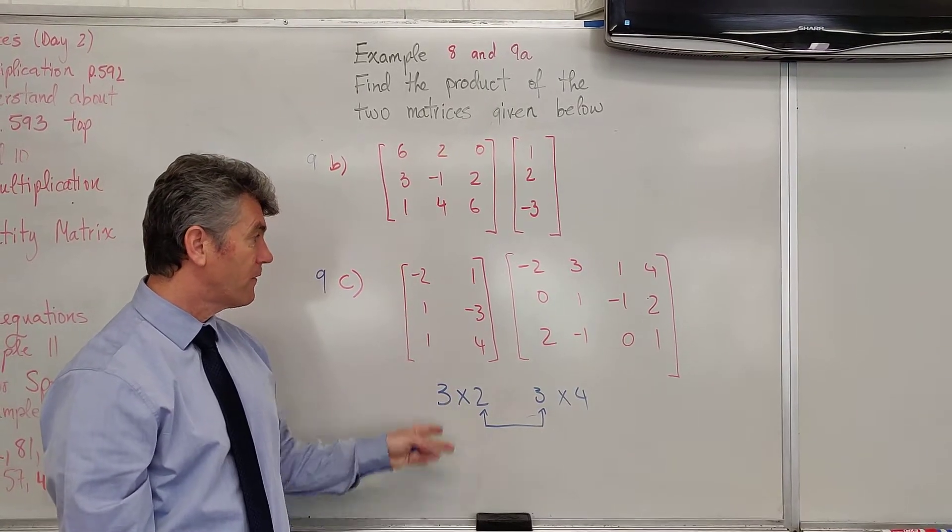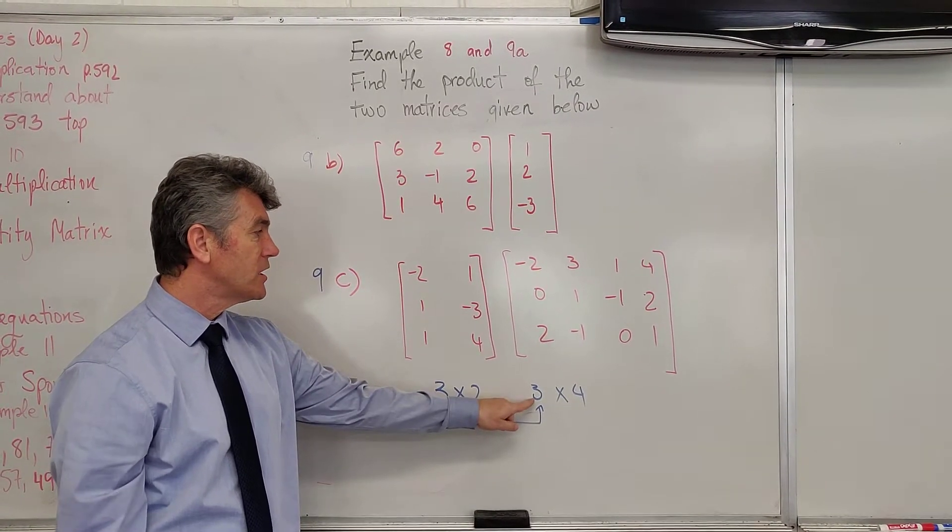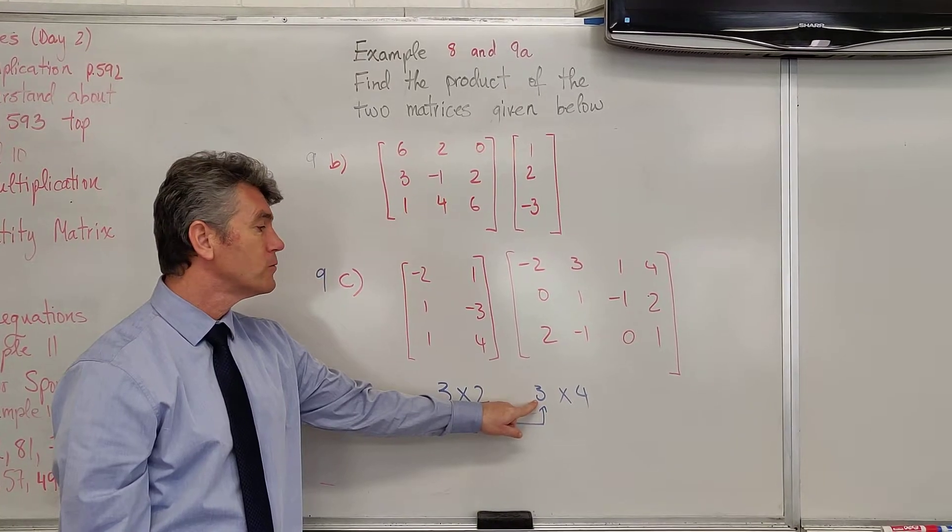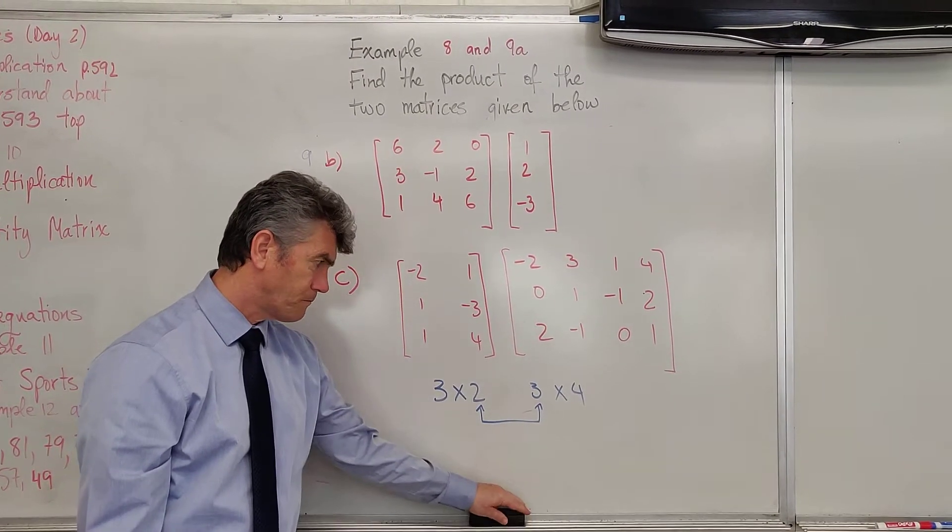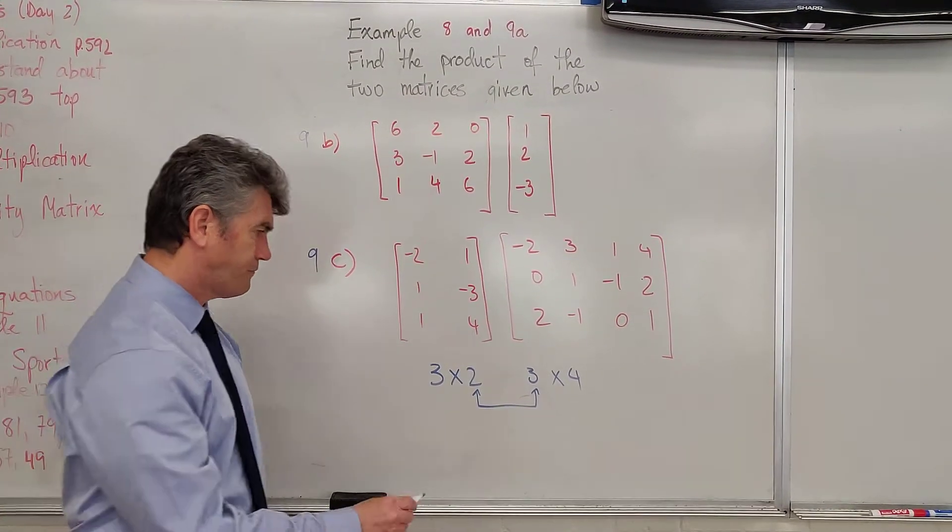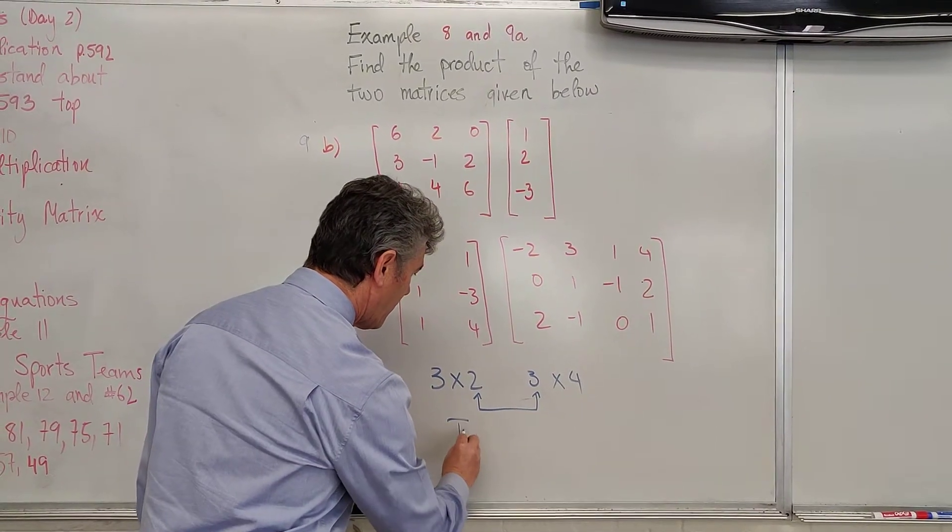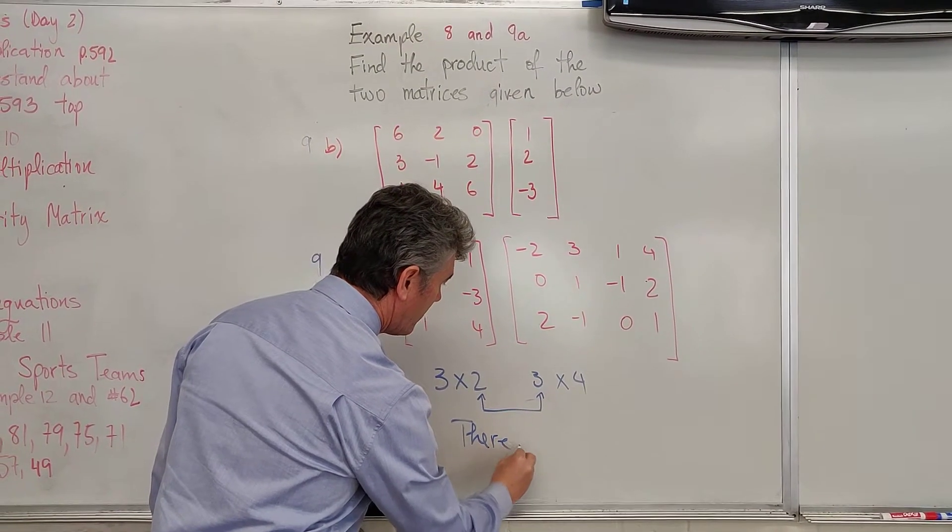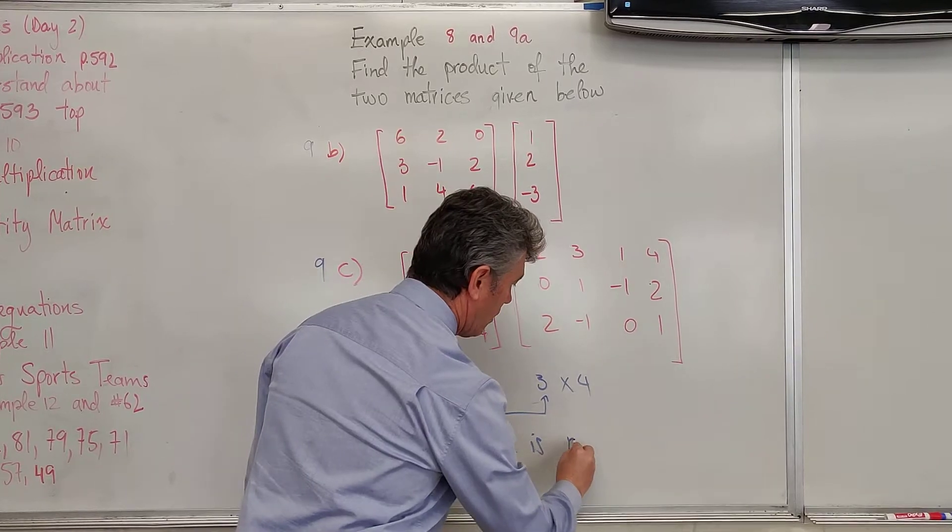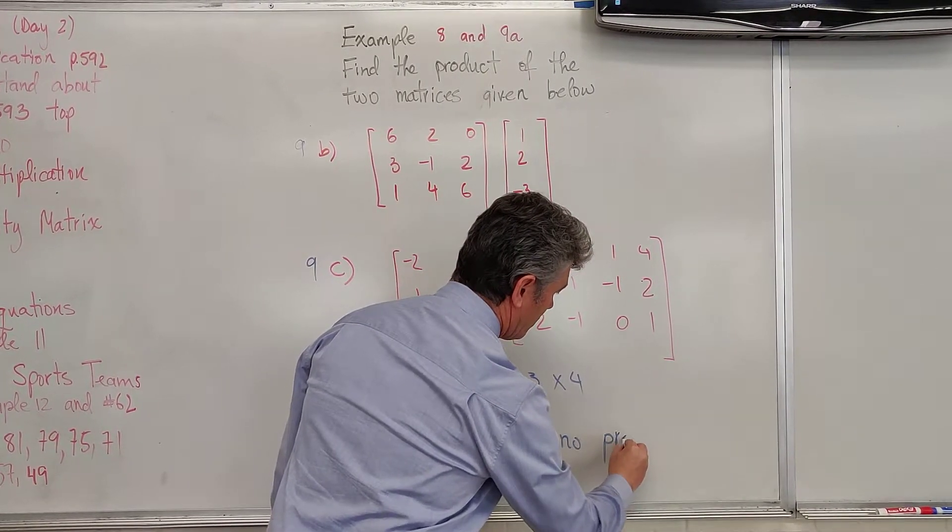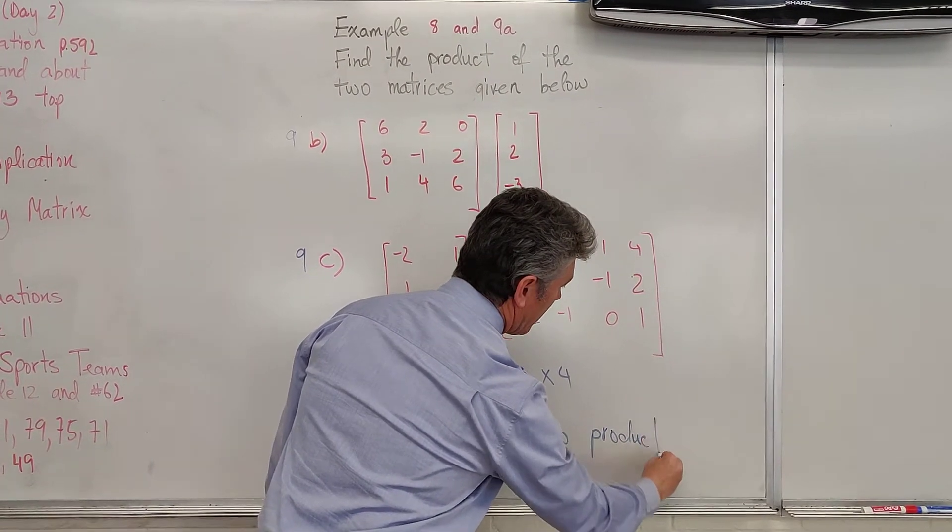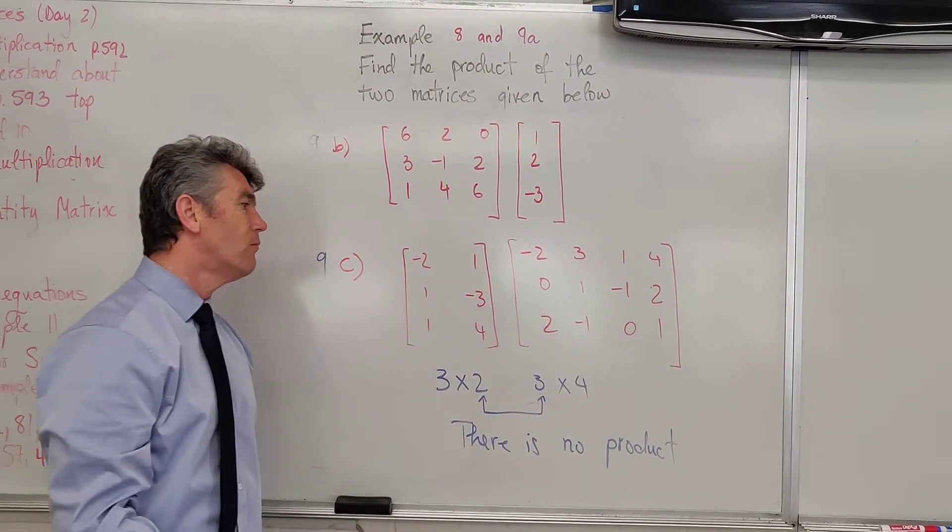The problem is that the number of columns does not match the number of rows. And so, we start right there. There is no... A and B can not be multiplied.